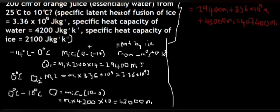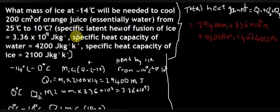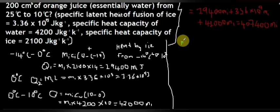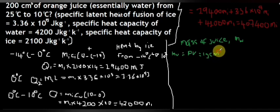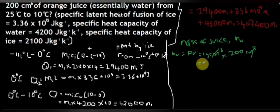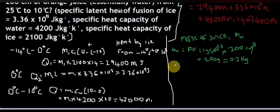To calculate the heat lost by the juice, we first need to find its mass since we are only given the volume. The mass of the juice (treating it as water) equals density times volume. The density of water is 1 gram per cm³, times the volume of 200 cm³, giving 200 grams. Converting to kilograms by dividing by 1000, we have 0.2 kilograms.